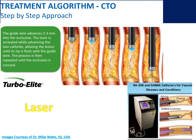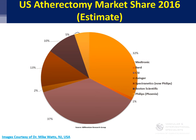Moving from crossing to atherectomy devices, the laser is a nice segue — it's really the only atherectomy device that can also be used as a crossing catheter. You can cross a CTO without being over the wire with a laser. You engage the cap, activate the laser, thread a little bit of wire, activate it some more, thread a little wire — burning, moving, burning, moving. You can still go subintimal in some cases, but if you stay straight you can get through a lesion, and on top of that you are doing some atherectomy.